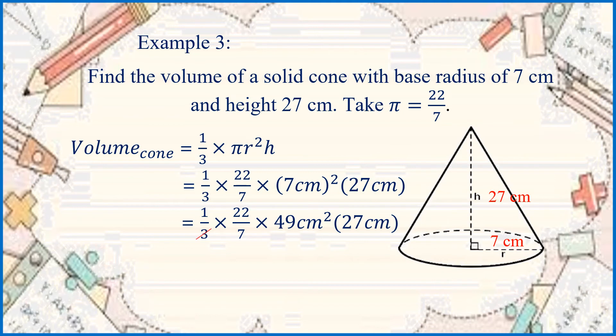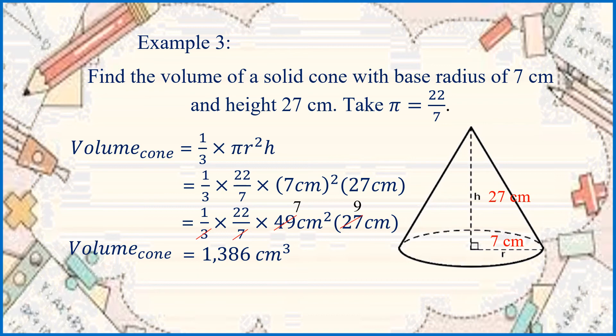Simplifying, we get 1 over 3 times 22 over 7 times 49 square cm times 27 cm. Cancelling 3 and 27 gives 9, and cancelling 7 and 49 gives 7. Multiplying 22 times 7 times 9, the volume of the cone is equal to 1,386 cubic centimeters. Note that volume is always expressed to the third power. That is example number 3.